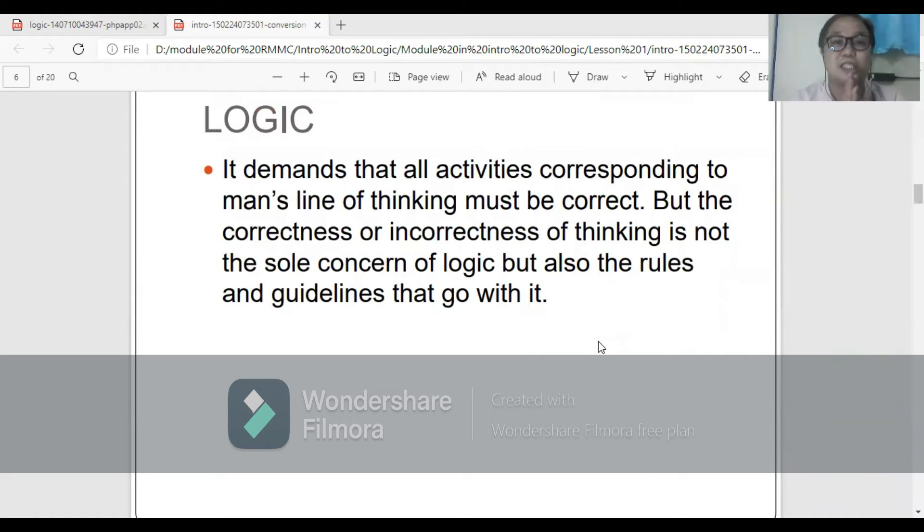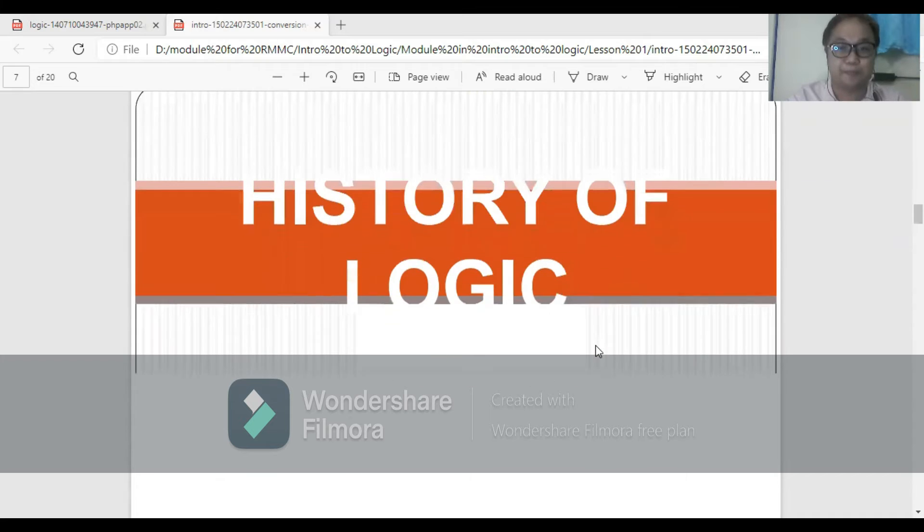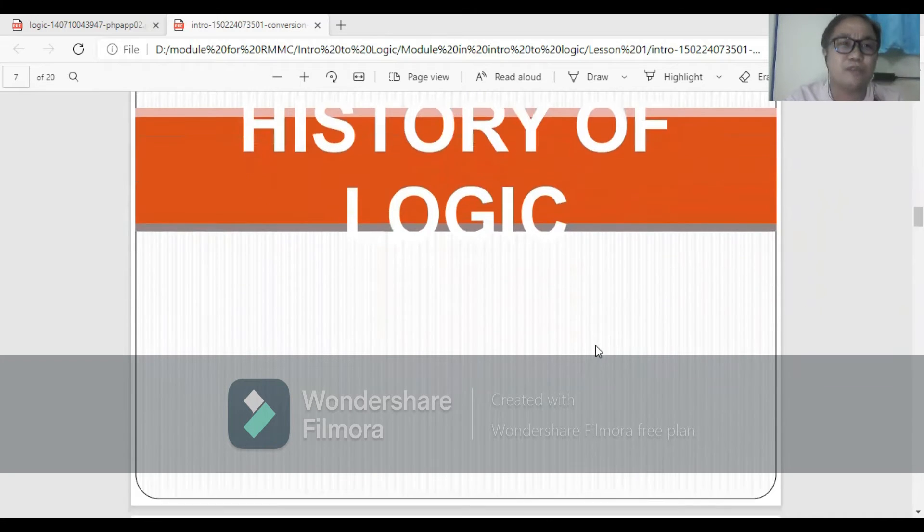When we say logic, it demands that all activities corresponding to man's line of thinking must be correct. But the correctness or incorrectness of thinking is not the sole concern of logic, but also the rules and guidelines that go with it. So what is the history of logic?